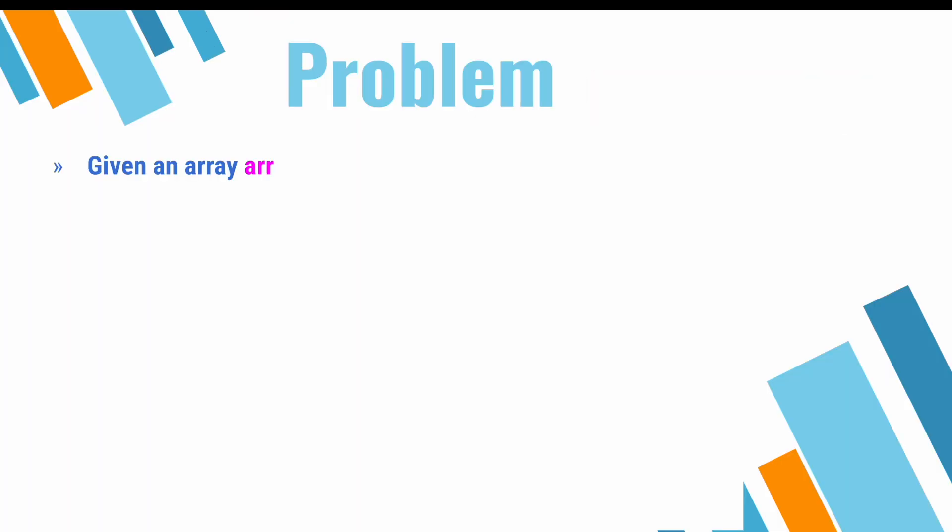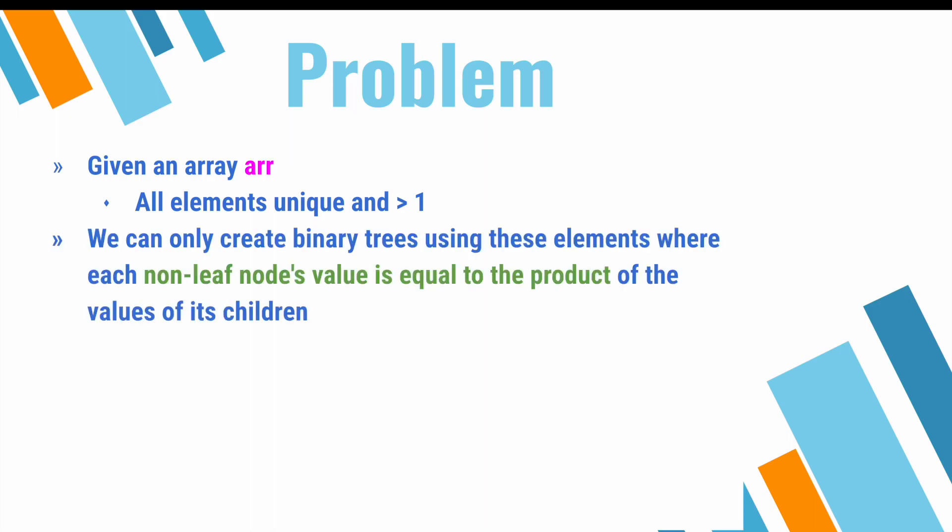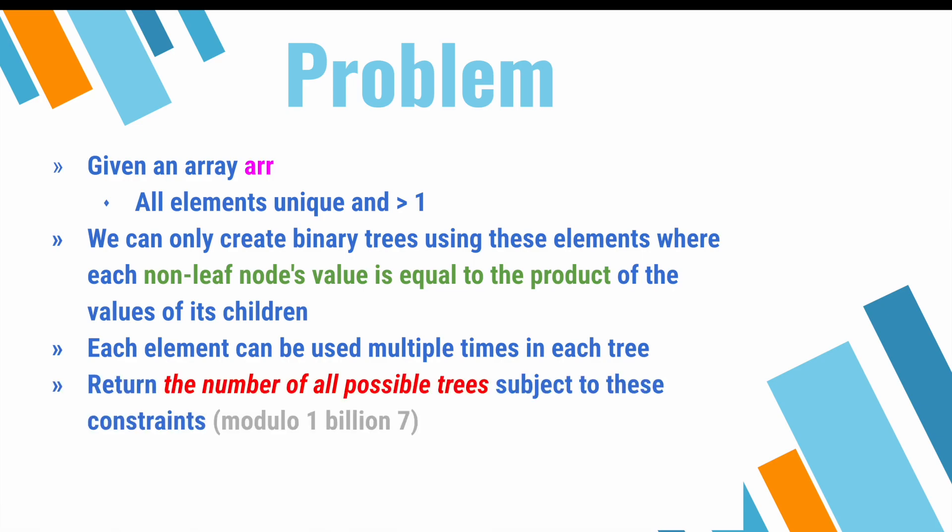So in this problem, we're given an array, and all its elements are unique and greater than one. We're also told that we can create binary trees using elements inside this array, where each non-leaf's node value is equal to the product of the values of its children. Each element can be used multiple times in each tree. And finally, we're told to return the number of all possible trees subject to these constraints.